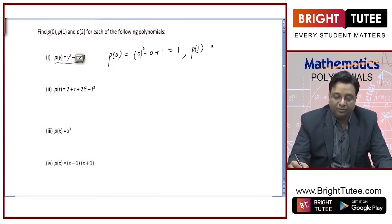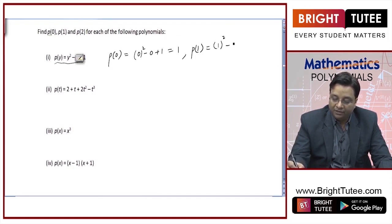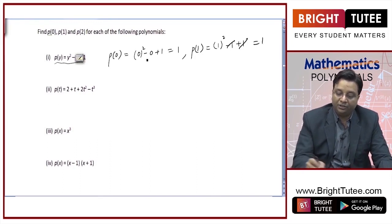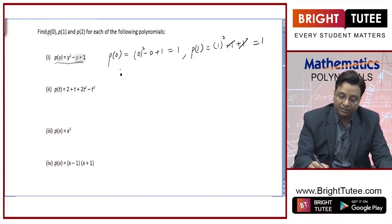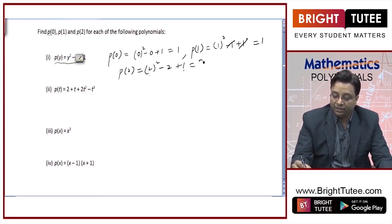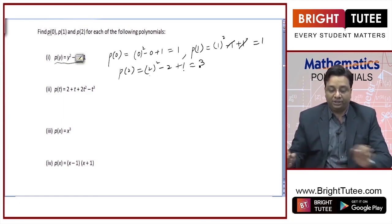For p of 1, I need to replace y by 1 everywhere: 1 squared minus 1 plus 1, so it will be 1 again. p of 0 is 1, p of 1 is also 1 in this case. p of 2 is 2 squared minus 2 plus 1, that is 4 plus 1 is 5 minus 2, which is 3. So p of 2 is 3.